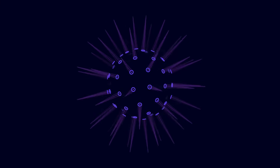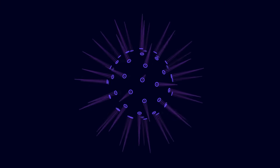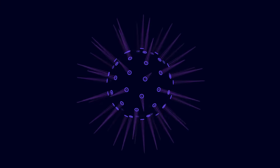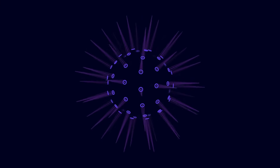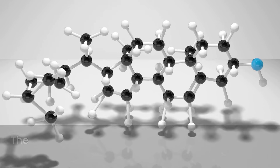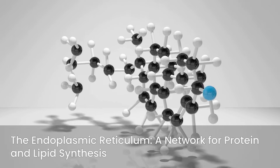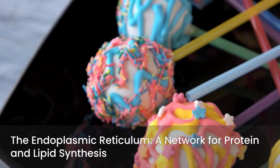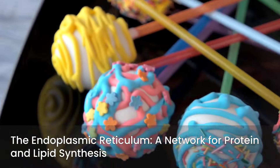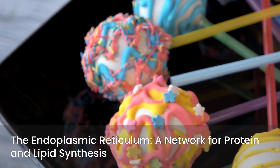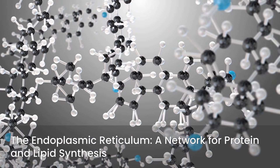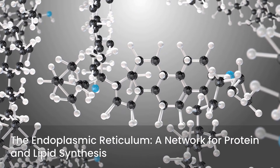The nucleus is the cell's command center, housing the genetic material. It's where DNA replication occurs, ensuring genetic continuity, and where transcription initiates, leading to protein synthesis. The endoplasmic reticulum, or ER, is a vast network of membranes. The rough ER is studded with ribosomes and is crucial for protein synthesis, especially for proteins destined for secretion or insertion into membranes. The smooth ER is involved in lipid metabolism and detoxification.